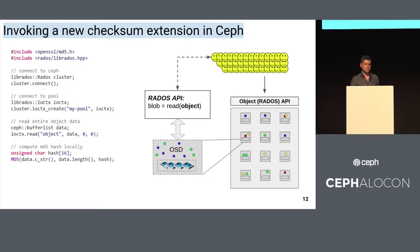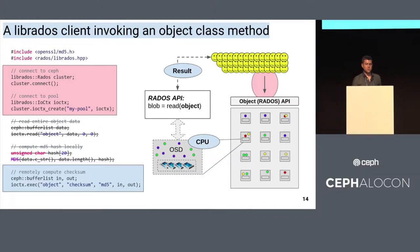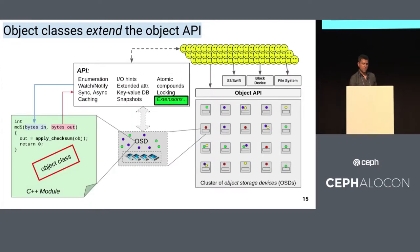So what would this example look like if Ceph actually provided such functionality? Again, we'd connect to the cluster, but instead of reading the data and computing the hash function locally on the client, we'd invoke a remote function that's been injected into the system. At the bottom is an example where we execute the MD5 function and apply it to the object named 'object'. The CPU resources on the OSD perform all that work and only the result is returned to the client. Now we're putting code into a module — let's look at how to actually build and code these.